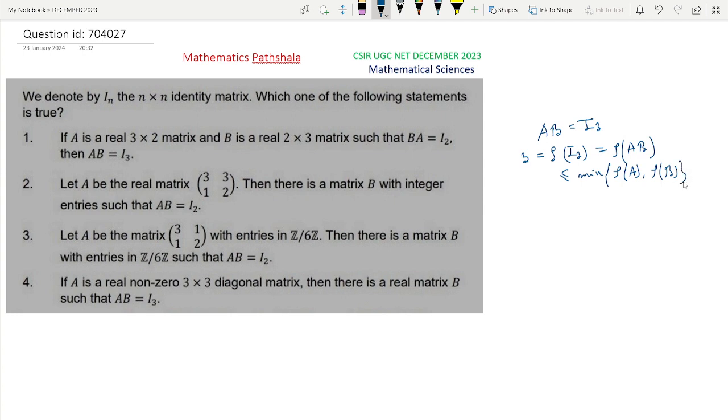Since A is a 3 by 2 matrix, rank of A is at most 2, and since B is a 2 by 3 matrix, rank of B is also at most 2. So rank of AB is less than or equal to minimum of 2 comma 2, which equals 2. So we get 3 less than or equal to 2, which is a contradiction. So this case cannot happen. Option 1 is not the correct option.